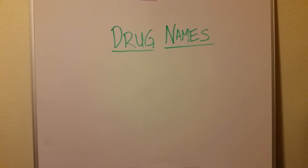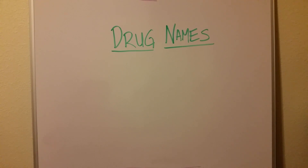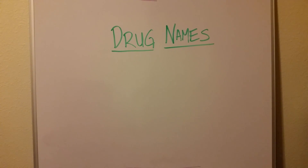This video is going to be an introduction to the names of drugs — the different kinds of names, why they're named a certain way, how they're named, and what people mean when they talk about generic drugs or proprietary drug names. I'm going to talk about this in chronological order. There are four kinds of drug names: the chemical name, the company name, the brand name, and the generic name. Those four naming systems kind of follow the development of a drug and the drug's lifespan.